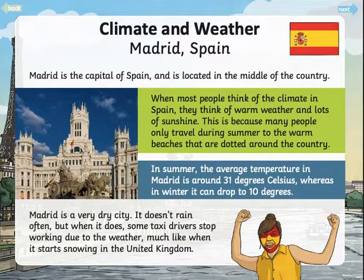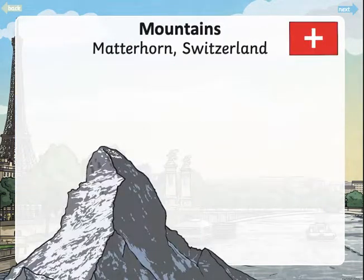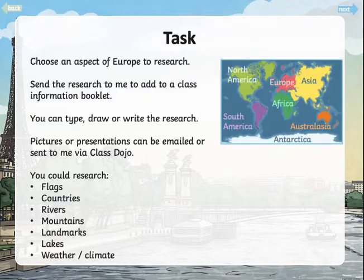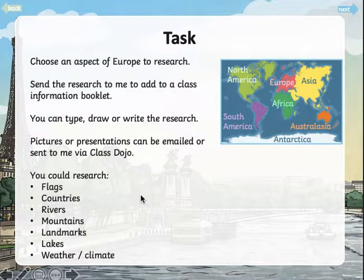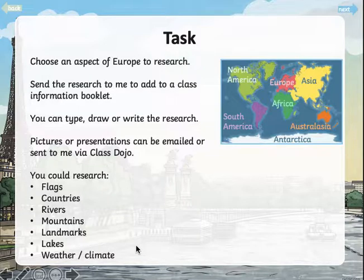So that's the weather and climate aspect. If we go back to the beginning again, I can remind you of the tasks you can choose from. How you set it out is up to you — just send it in via Class Dojo or email me. So you could do some more research on flags, countries, rivers, mountains, or landmarks. It could even be lakes or the weather or climate. It could be based on somewhere you've been, somewhere you'd like to go, or one of the things you've seen already in this PowerPoint.